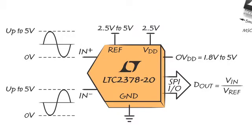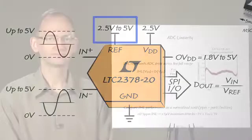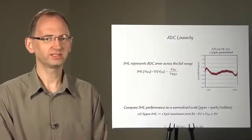The A2Ds provide numerical values representing the differential analog input voltage relative to a reference voltage. Full scale is set by applying an external 2.5V to 5V reference. Now let's talk about A2D linearity.